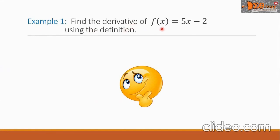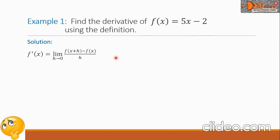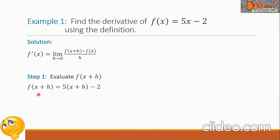Find the derivative of f of x equals 5x minus 2 using the definition. Writing our formula, for step one we evaluate f of x plus h by replacing every x with x plus h. So we have f of x plus h equals 5 times the quantity x plus h, minus 2, which simplifies to 5x plus 5h minus 2.